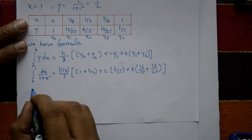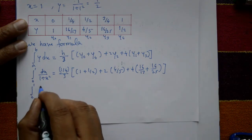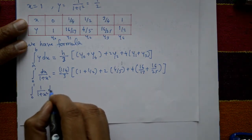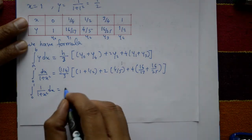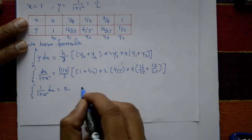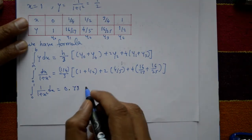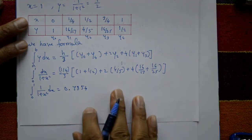Using a calculator, the integral from 0 to 1 of 1/(1+x²) dx equals 0.7854.